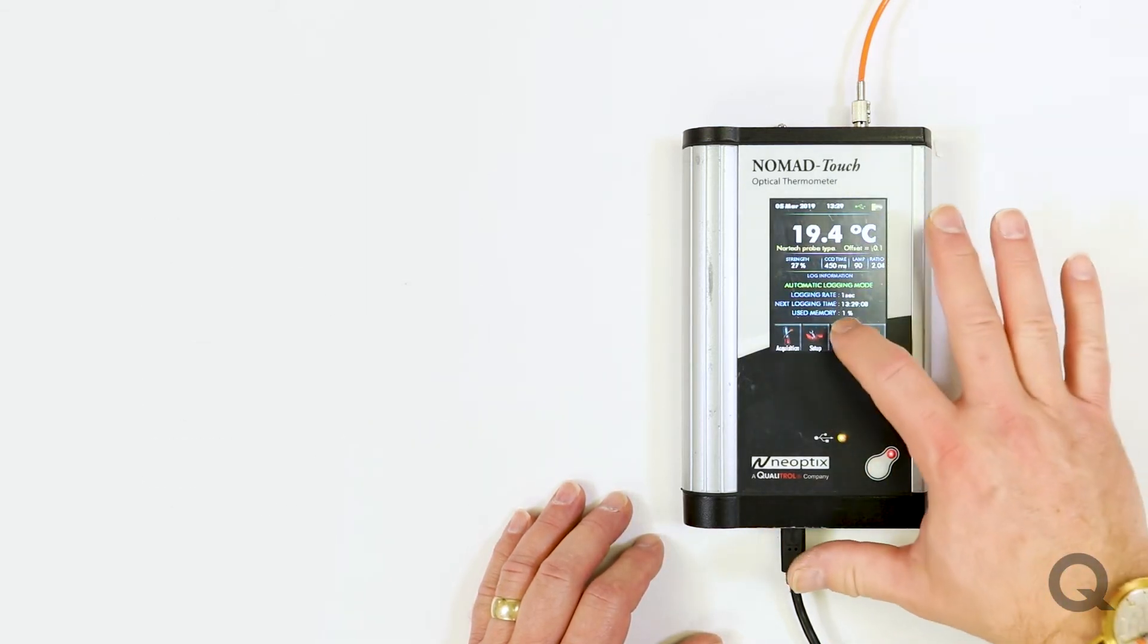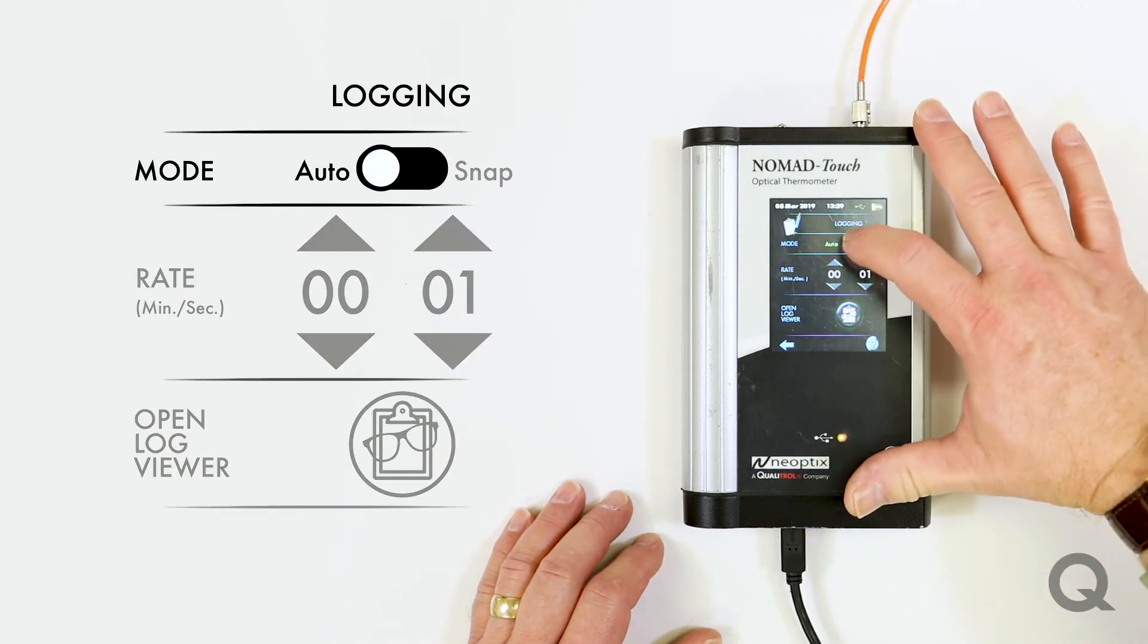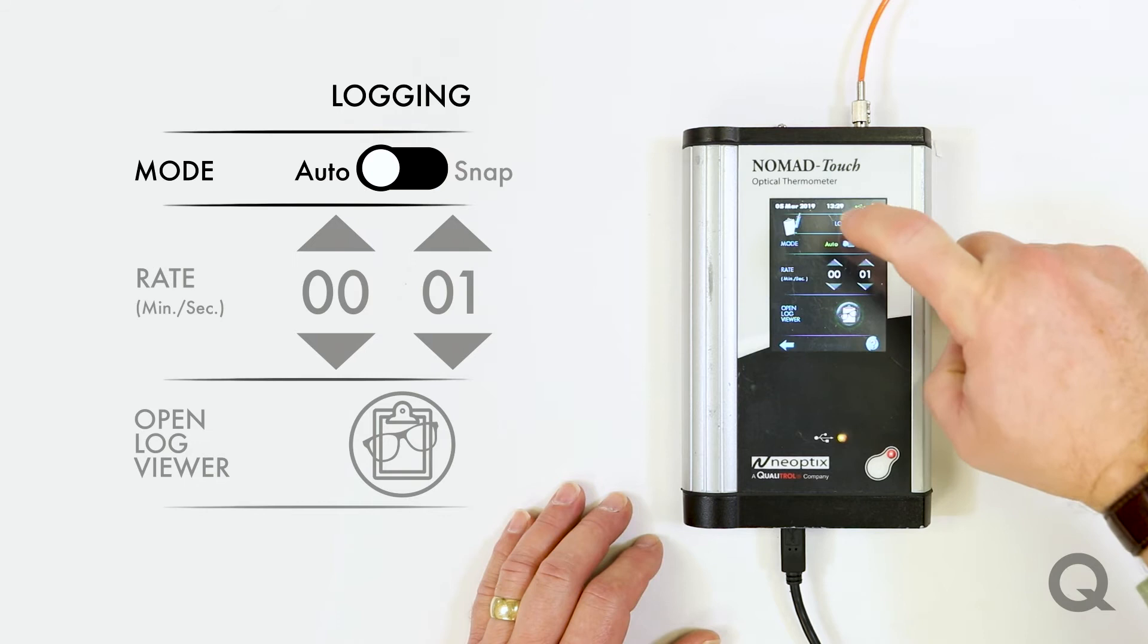When you go into data logging, we now have the ability to do an automatic or a snapshot, and it's just going to take an immediate picture and log that of what's going on.